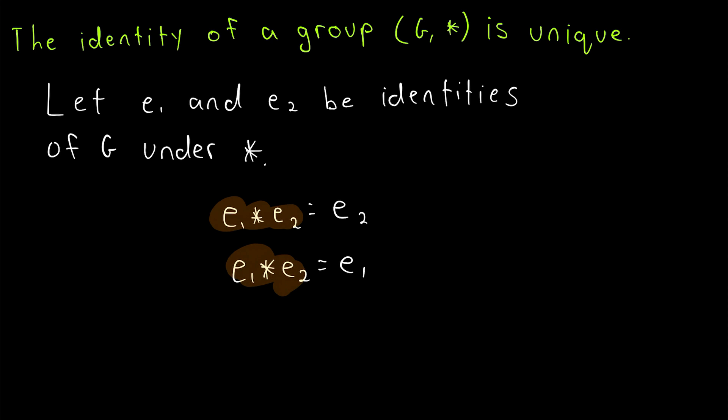Then, we can see, by substitution, we have that e₁ is equal to e₂, and that proves that the identity of a group is unique.